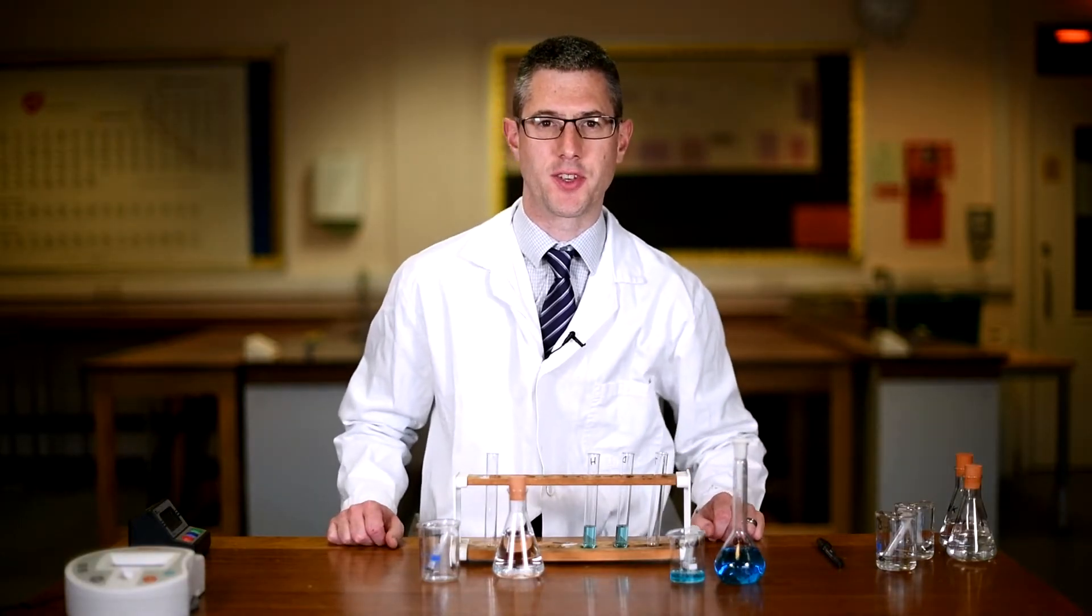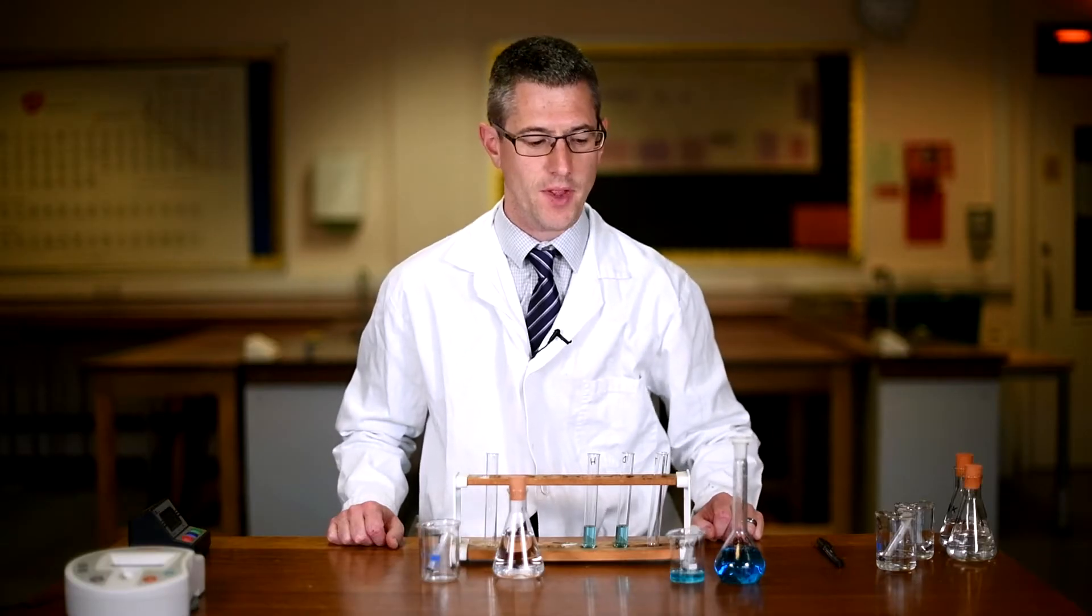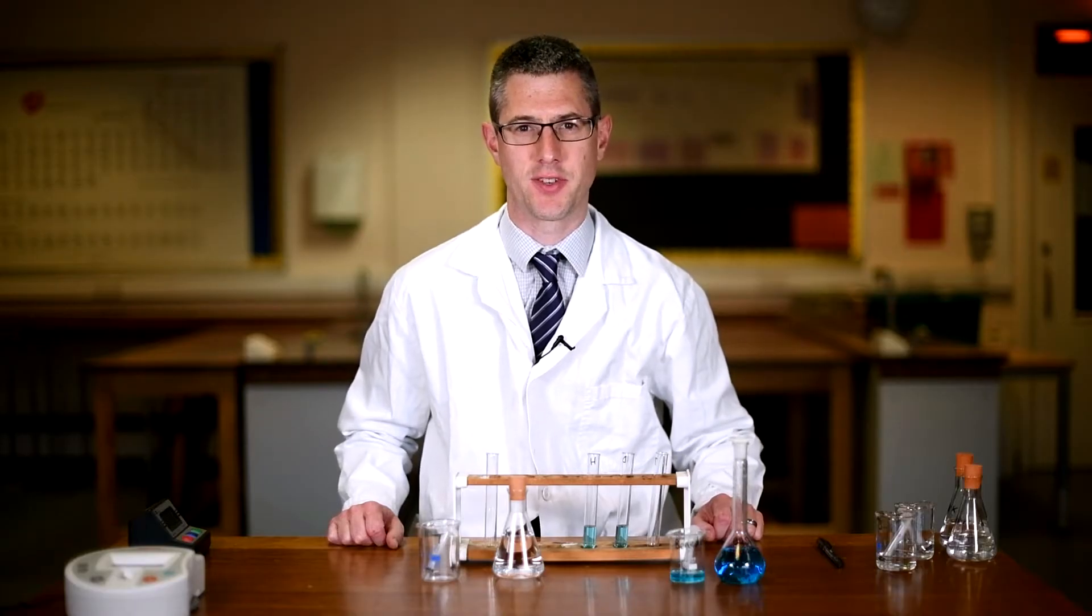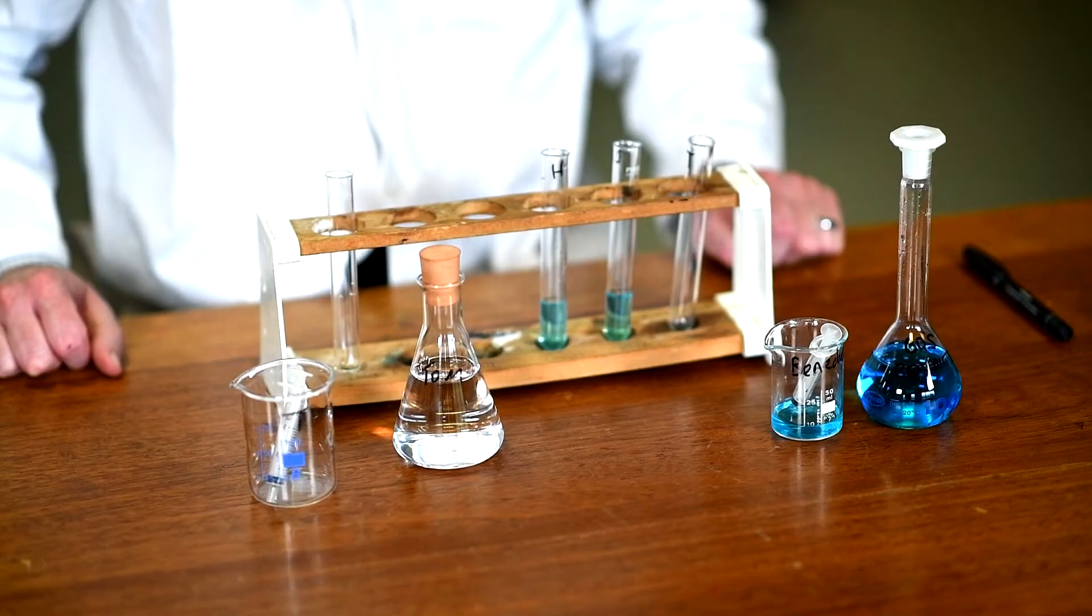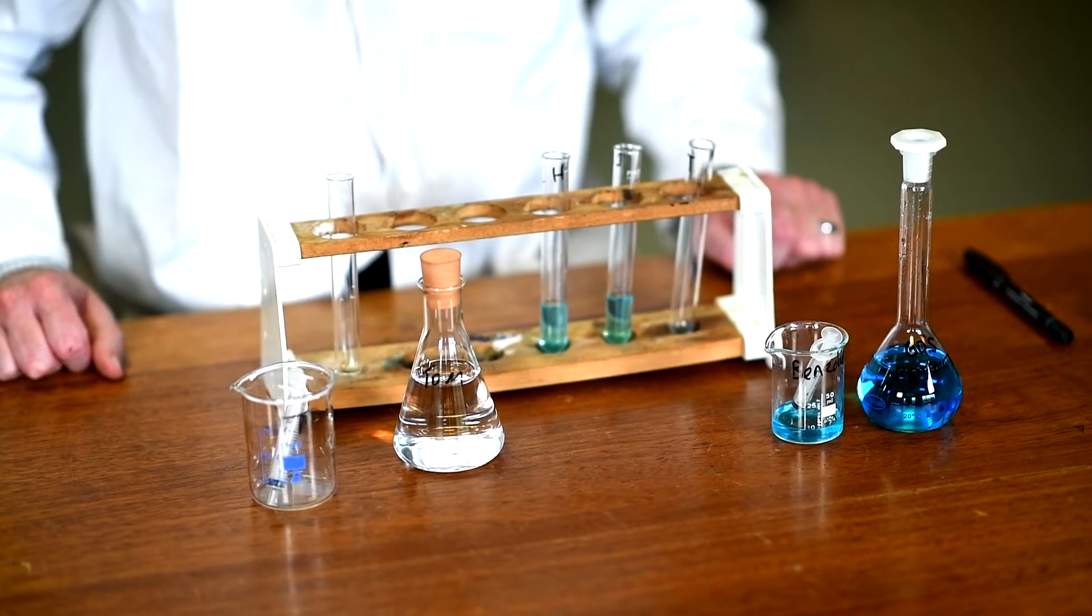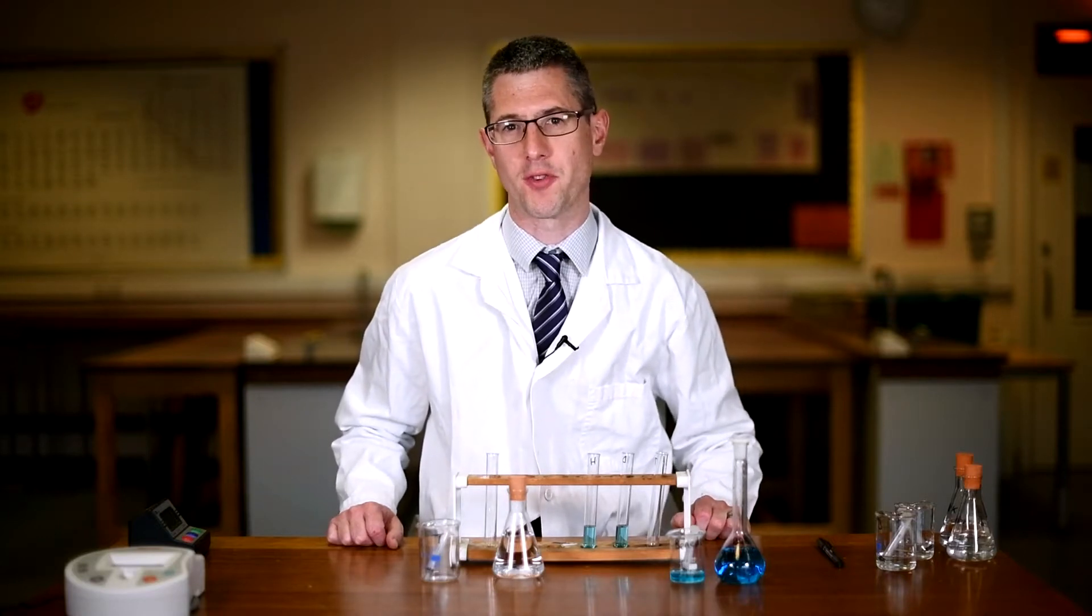You might remember Benedict solution is a test for a reducing sugar. This is actually slightly different to the Benedict you would have come across before. It is called quantitative Benedict solution. In the presence of sugar or a reducing sugar such as glucose, this does not produce the normal range of color changes you'll be familiar with, going from blue, which would be a negative result, through to brick red, which would be a strong positive result for glucose.